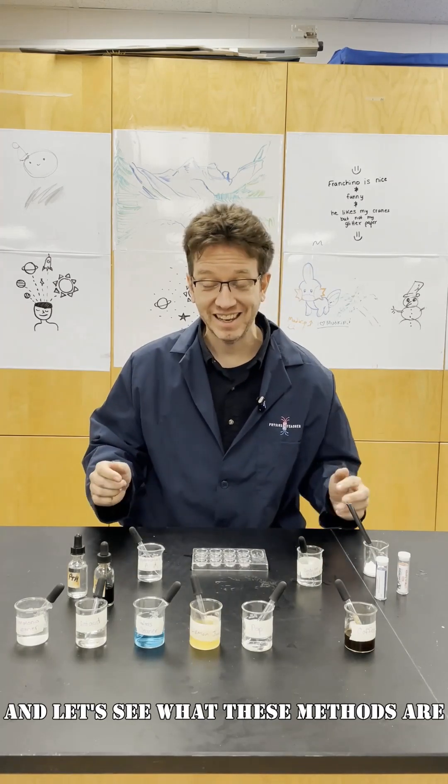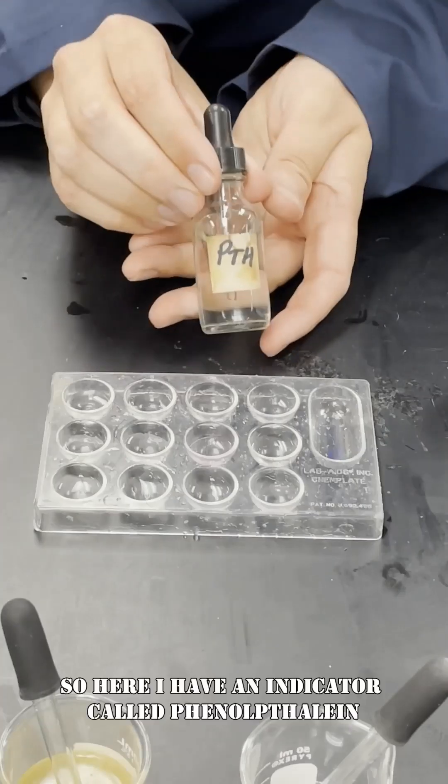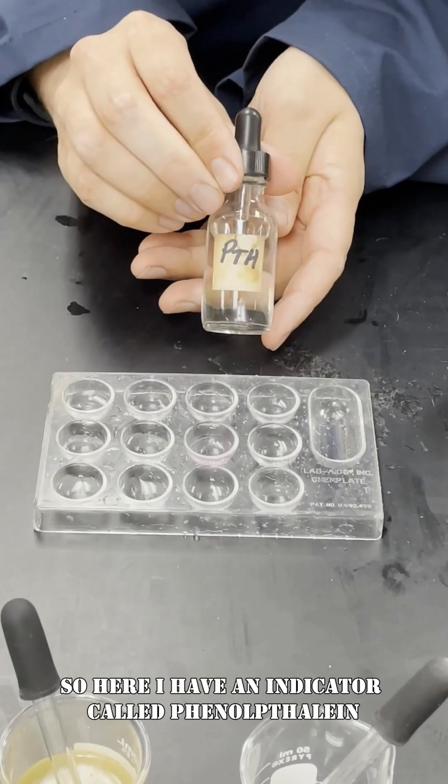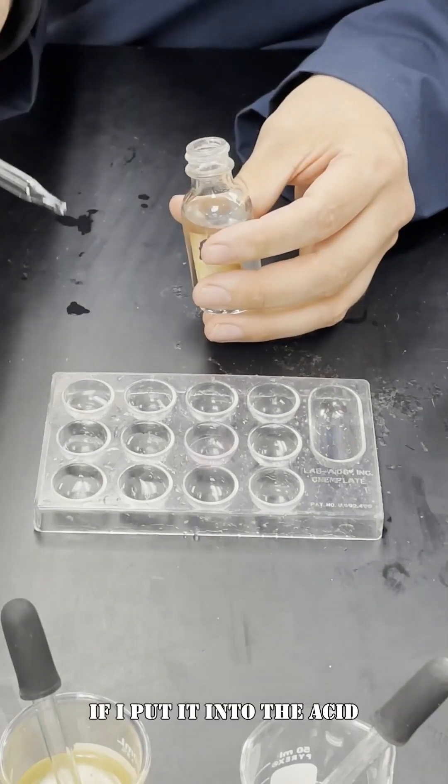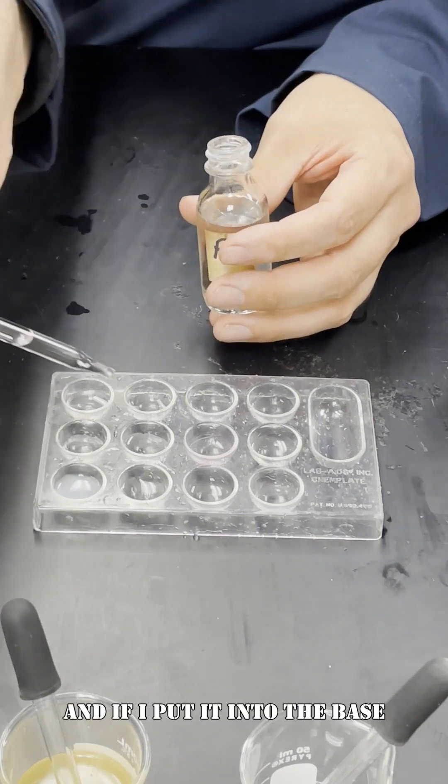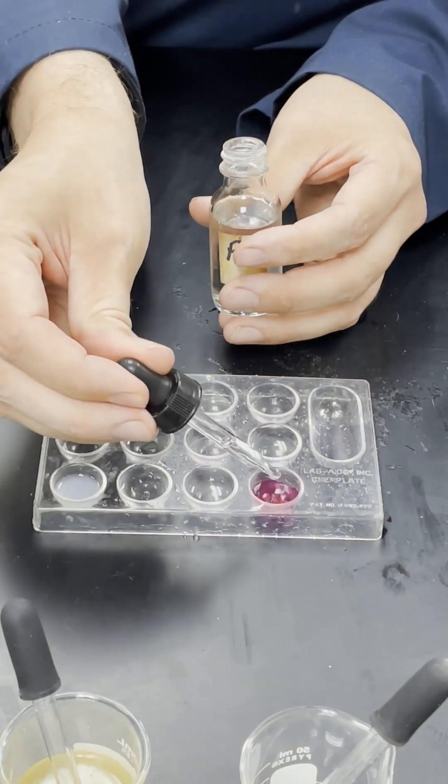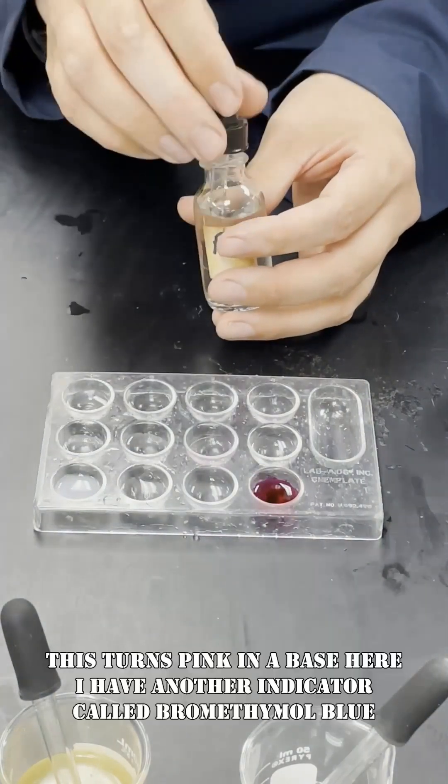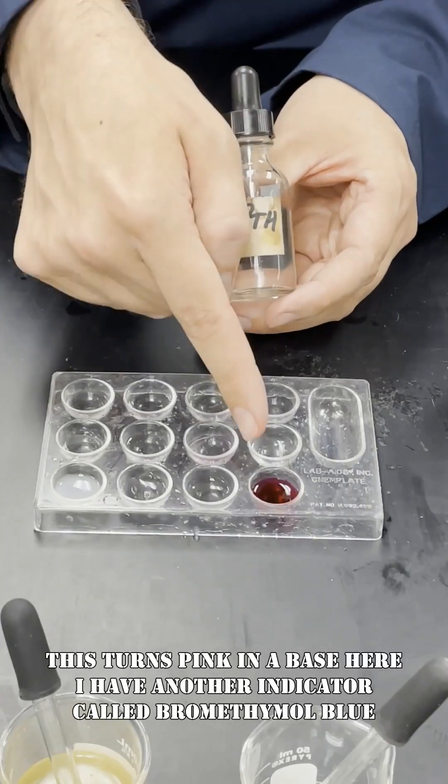Now come a little closer and let's see what these methods are. So here I have an indicator called phenolphthalein. If I put it into the acid, and if I put it into the base, whoa, this turns pink in a base.